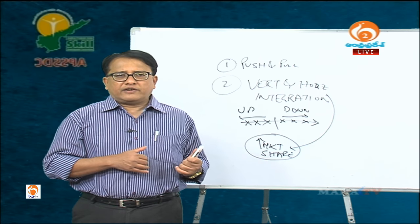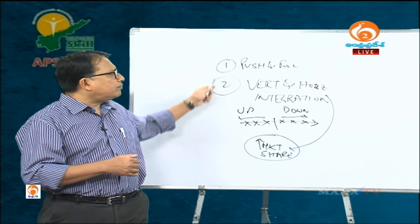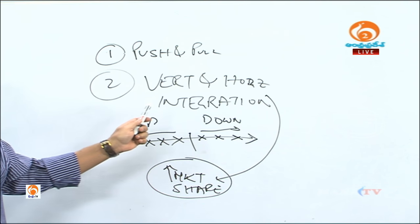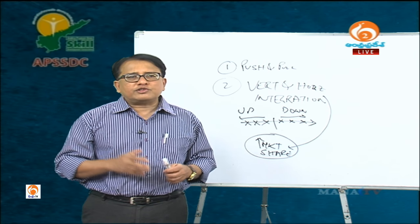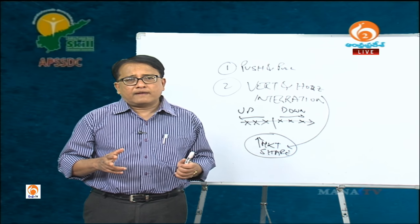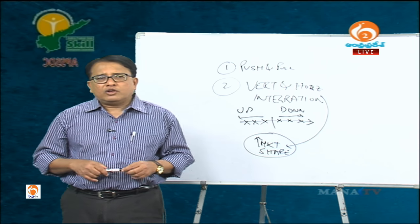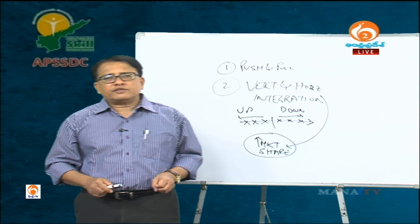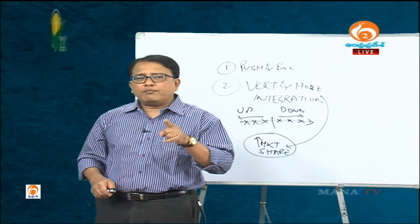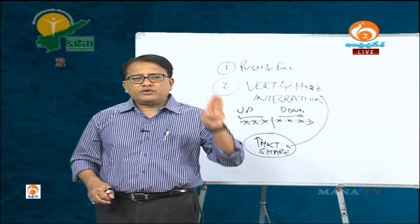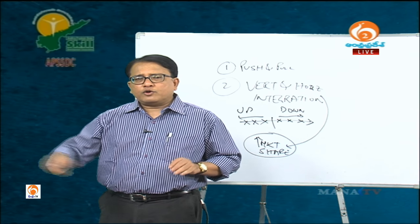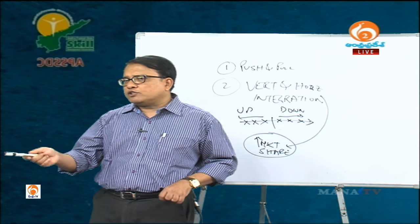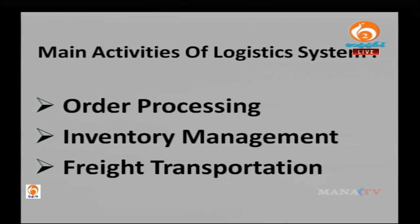That was just a recap — those are the two very important strategies we discussed. After that, we went to the chapter of logistics system and logistics decisions. It is very important to understand the three main activities of a logistics system. The main activities of a logistics system are order processing, inventory management, and freight transportation.